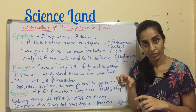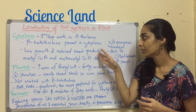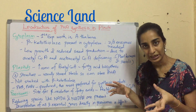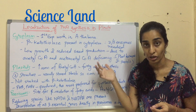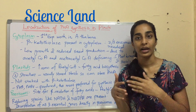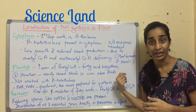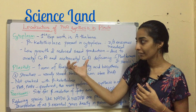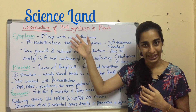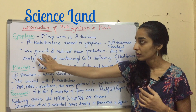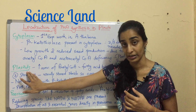The beta-ketothiolase vector would not be required. However, low growth and reduced seed production was observed in certain species because deficiency of acetyl-CoA and acetoacetyl-CoA was found. Plants generally require these two compounds for plant hormone and sterol biosynthesis, so using them to produce PHA results in low growth and reduced seed production.